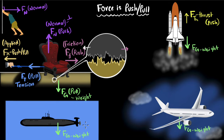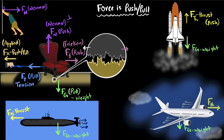Same is the case with the aeroplane. The engines of the aeroplane push the air backwards and generate a forward thrust.